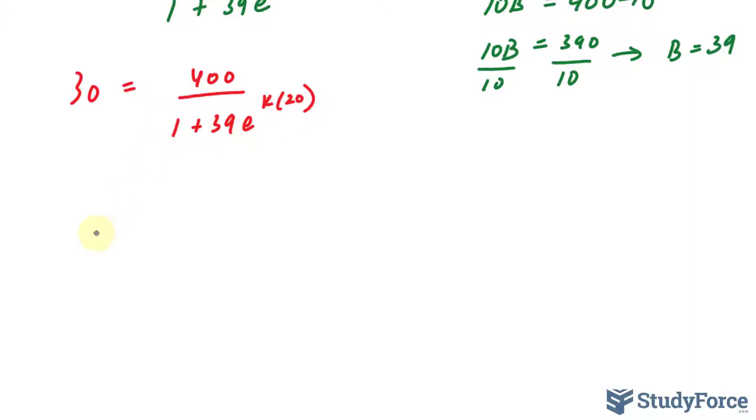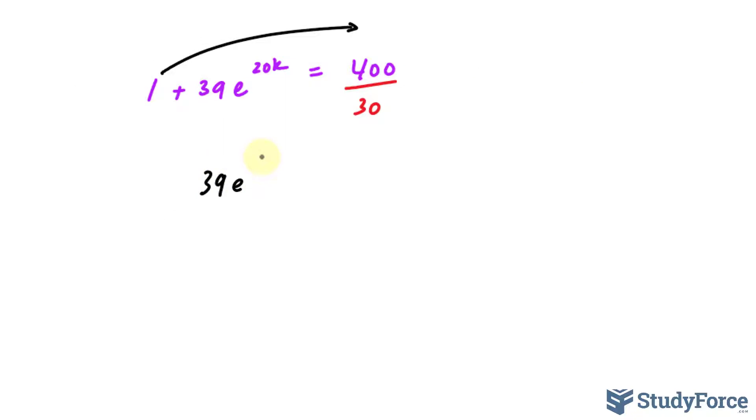I'll multiply both sides by the denominator again. 1 plus 39, e, 20k, times 30. And on the right side, we only have 400 because that cancels it out on the right side. Divide both sides by 30, we'll get rid of that. We can also erase the parentheses, no longer needed. I'll move this one over to that side. 39, e, 20k, I have 400 over 30. We can reduce this actually. So it's 40 over 3, minus 1. Then we have 39 on the left side, which we can divide both sides by. So this is what our function looks like after performing those techniques.